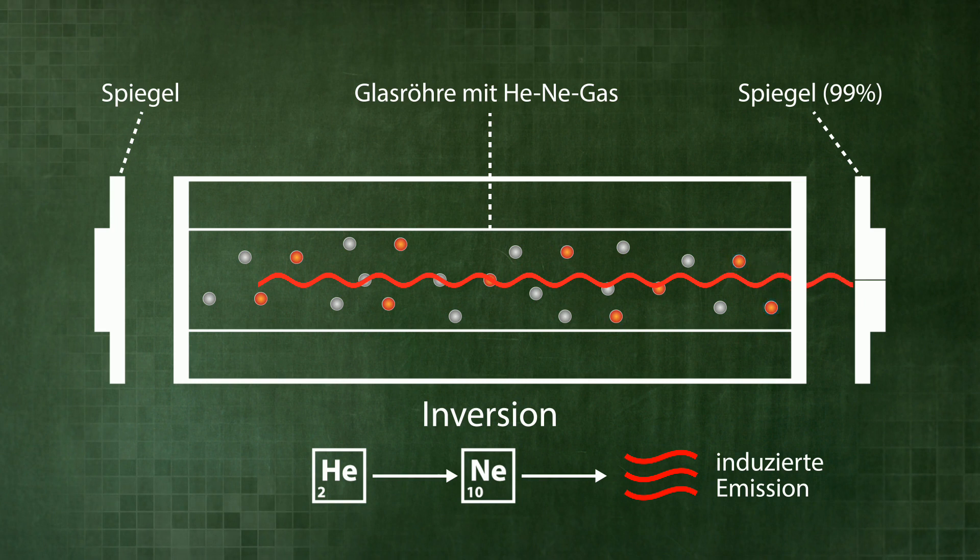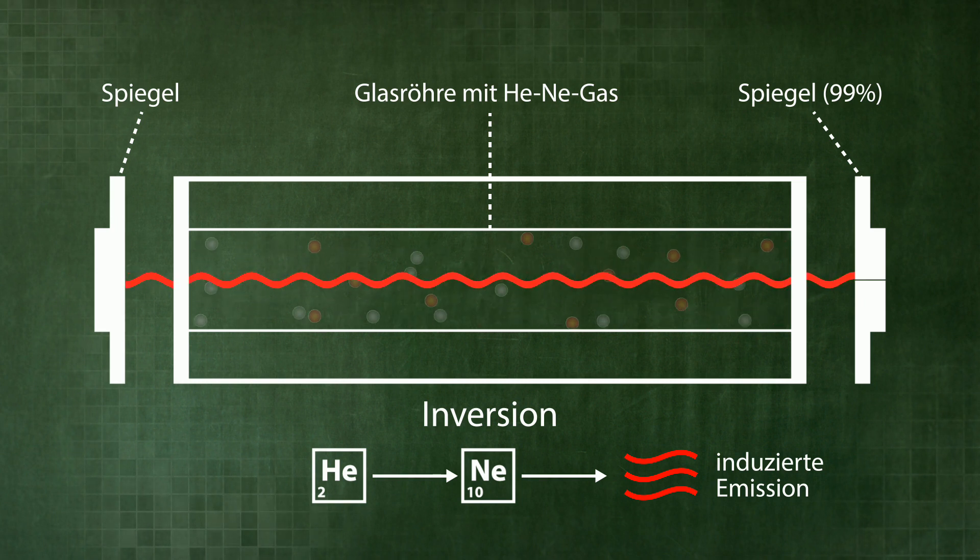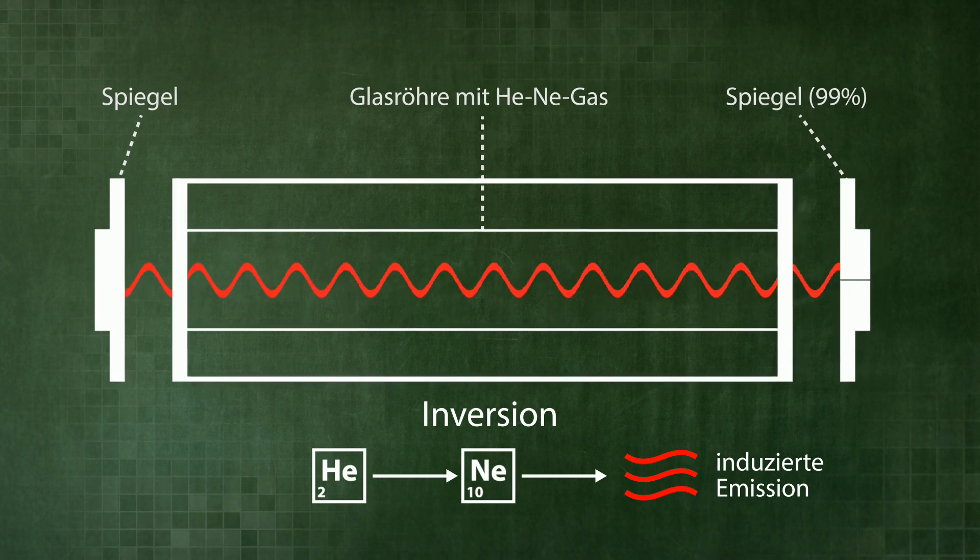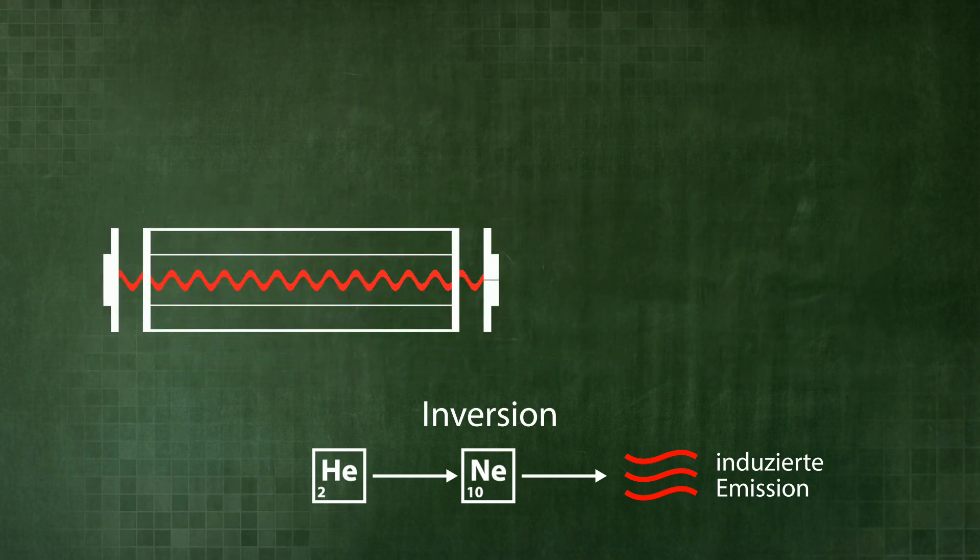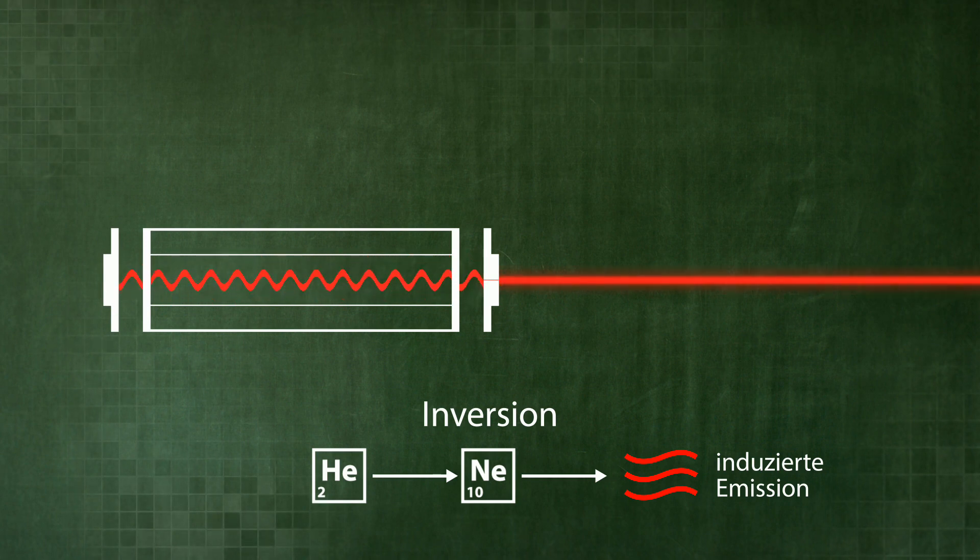These coherent photons are reflected back and forth in the resonator by the two mirrors. That creates a standing wave, which is amplified further and further. A section of this standing wave is decoupled by the mirror, which does not reflect at 100%. That is the laser beam we can see.